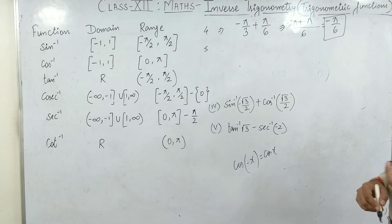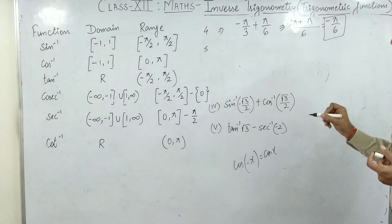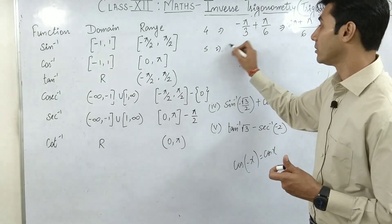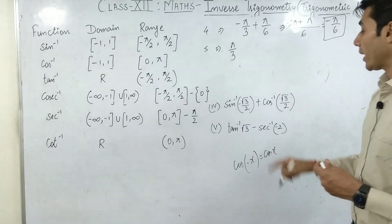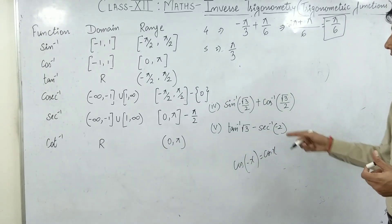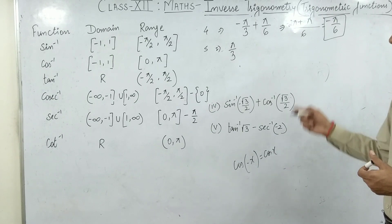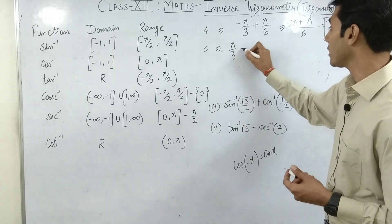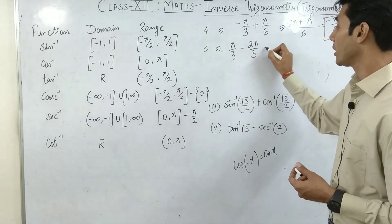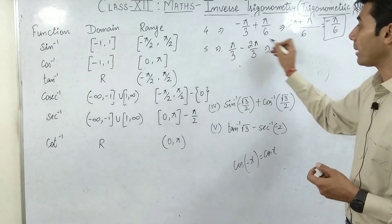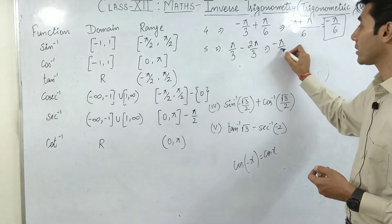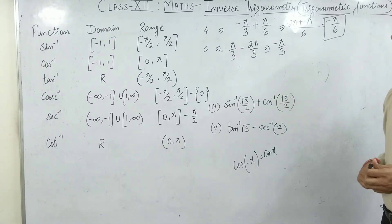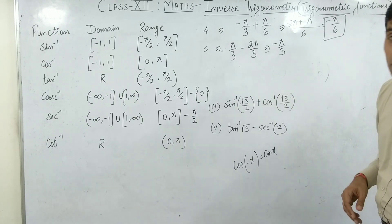Question number 5: tan inverse(root 3) minus sec inverse(minus 2). Tan inverse root 3 gives pi by 3. Sec inverse(minus 2) we just computed as 2 pi by 3. So the answer is pi by 3 minus 2 pi by 3 = minus pi by 3. That's all — question 5 is done.